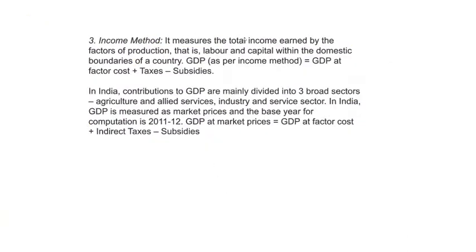The income method measures the total income earned by the factors of production — that is, labor and capital — within the domestic territories of the country. This means total income from all factors of production: land, labor, capital, and entrepreneurship. As per the income method, GDP equals GDP at factor cost plus taxes minus subsidies.